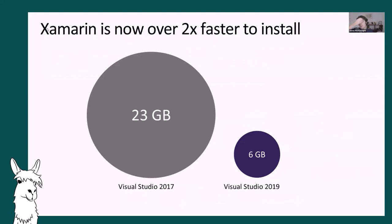The Xamarin team is focused on productivity and helping developers get started faster. One thing they focused on was shrinking installation time - they actually reduced the size of the overall install by one-third, from 23 gigabytes down to 6 gigabytes, and it's now twice as fast to install. If you already have prerequisites installed like Java or different Android SDKs, it won't duplicate the work.